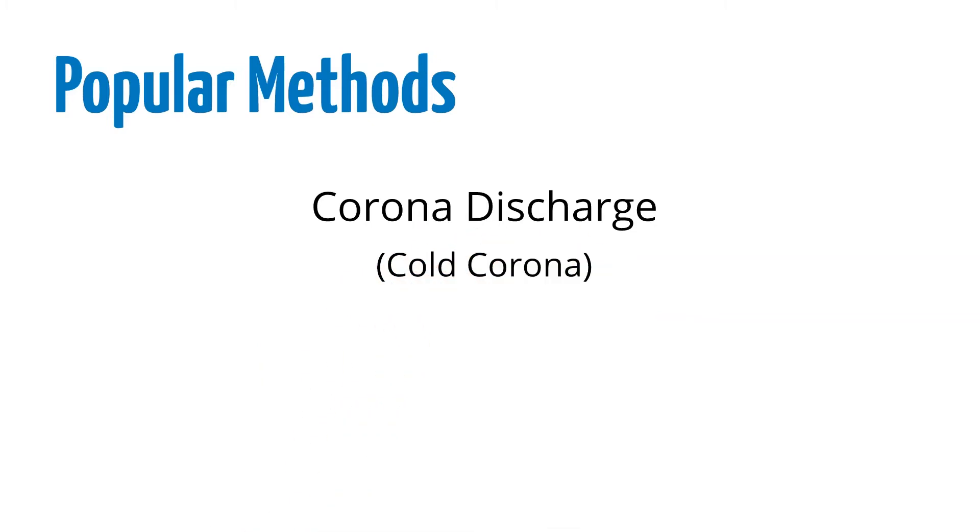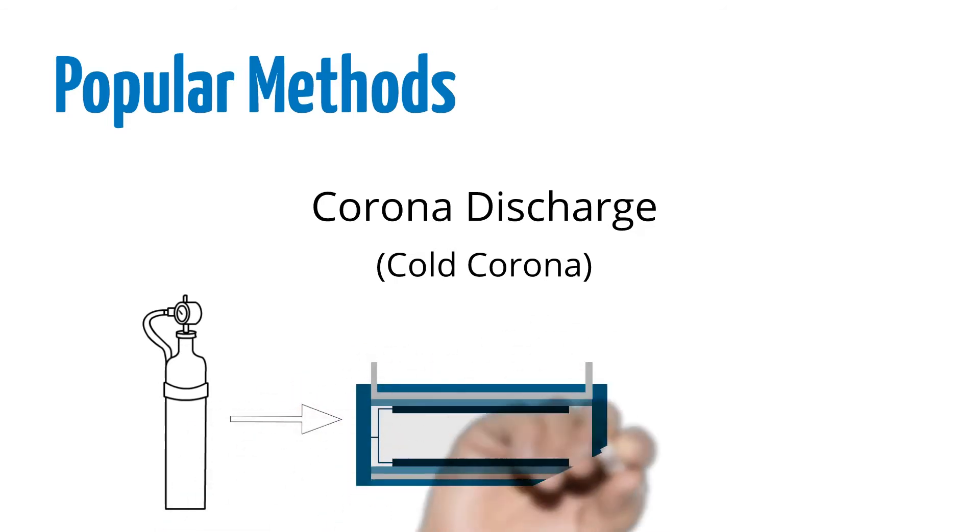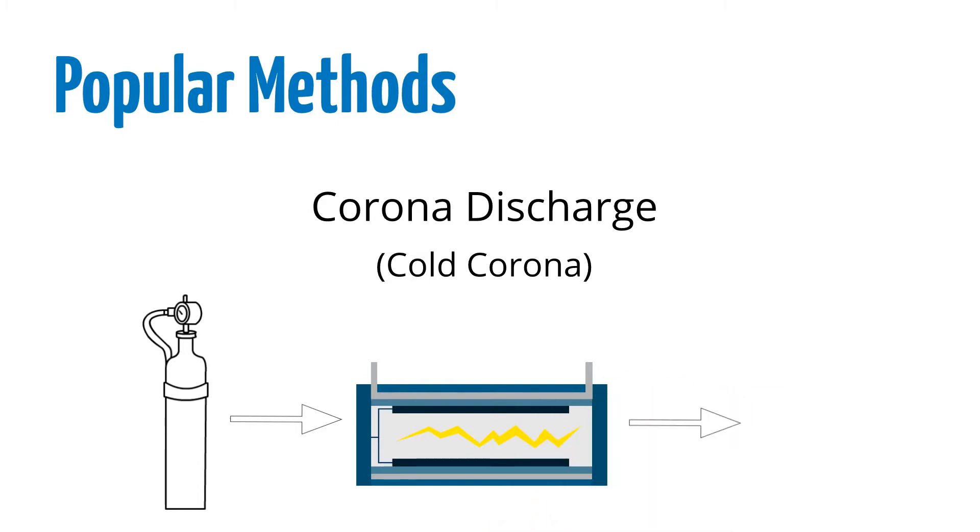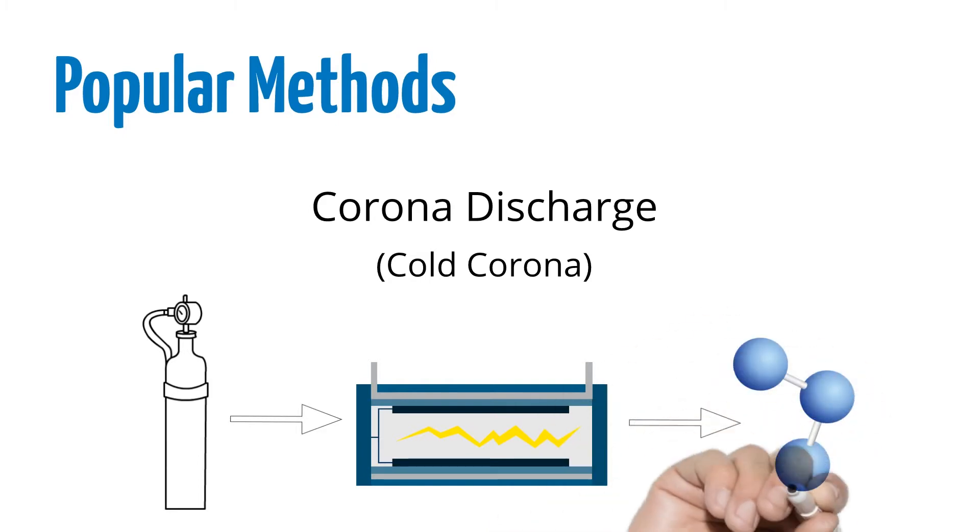Corona discharge is also called cold corona. It requires running pressurized high purity oxygen into an ozone cell where oxygen contacts an electric field forming ozone. Our ozone generators use this method with a ceramic electrode in the cell.